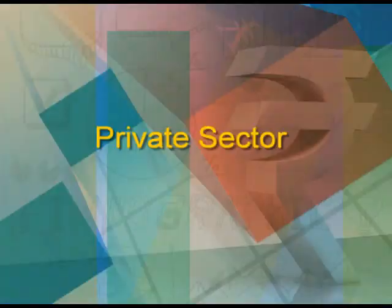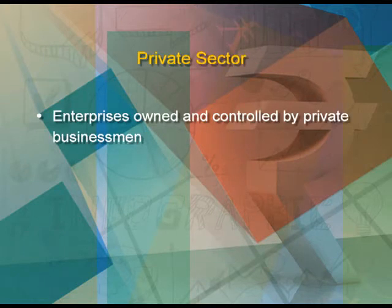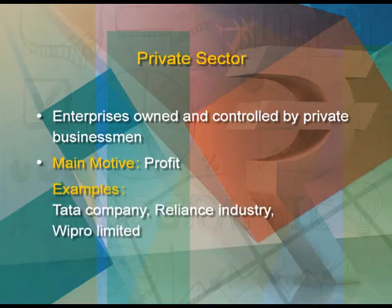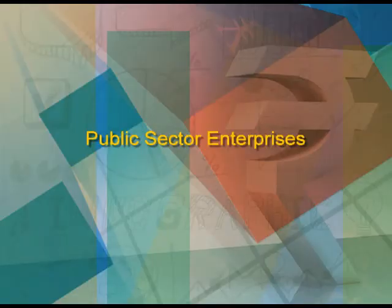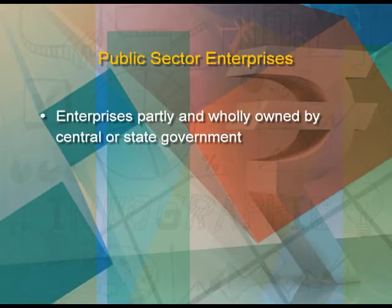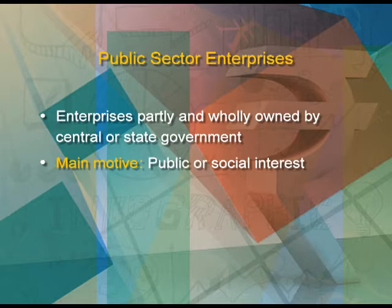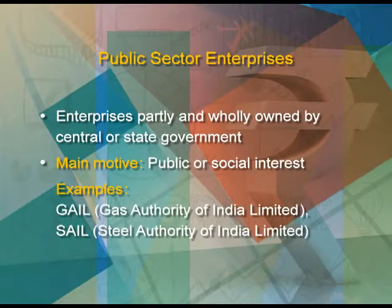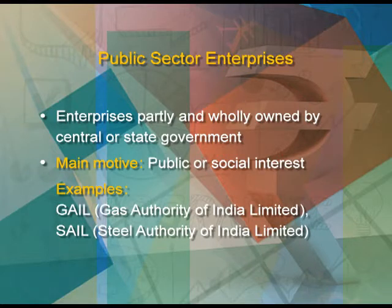Private sector enterprises are owned and controlled by private businessmen, with profit as their main motive — examples include Tata, Reliance Industries, and Wipro. Public sector enterprises are those partially or wholly owned by the central or state government; their main motive is public or social interest, working for general public welfare as well as earning profit — examples include GAIL (Gas Authority of India) and SAIL (Steel Authority of India).